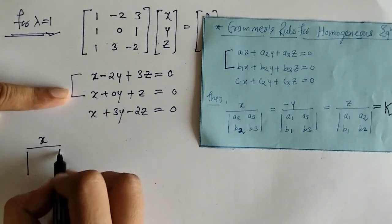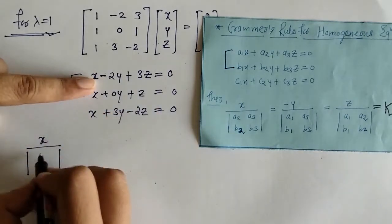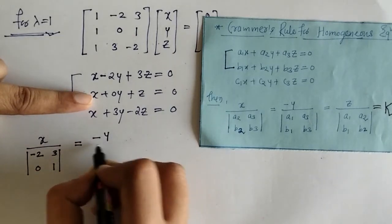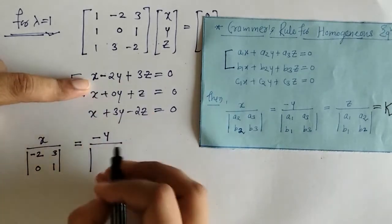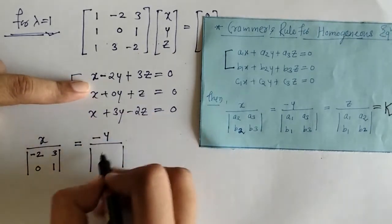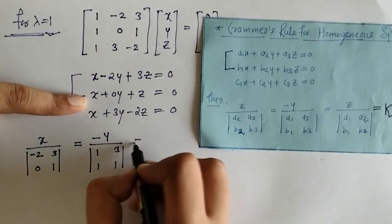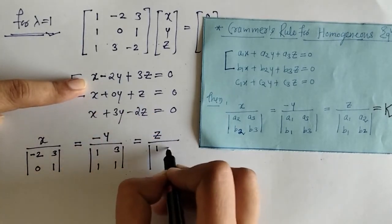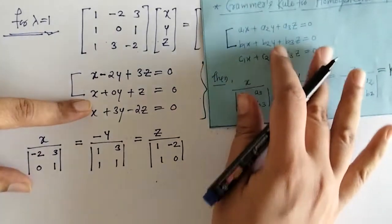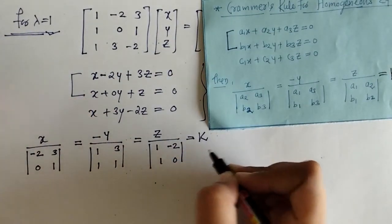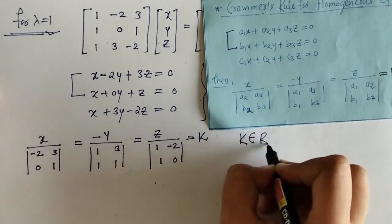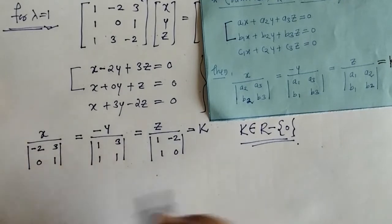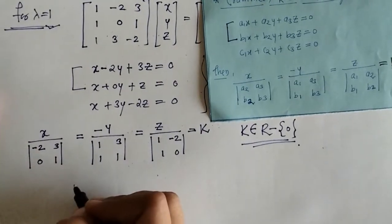So we write x over the determinant of remaining coefficients: minus 2, 3, 0, 1. Then minus y over the determinant with remaining coefficients of x and z: 1, 3, 1, 1. Then z over the remaining coefficients of x and y: 1, minus 2, 1, 0. All equal to a proportional constant k, where k is a real number, k not equal to 0.